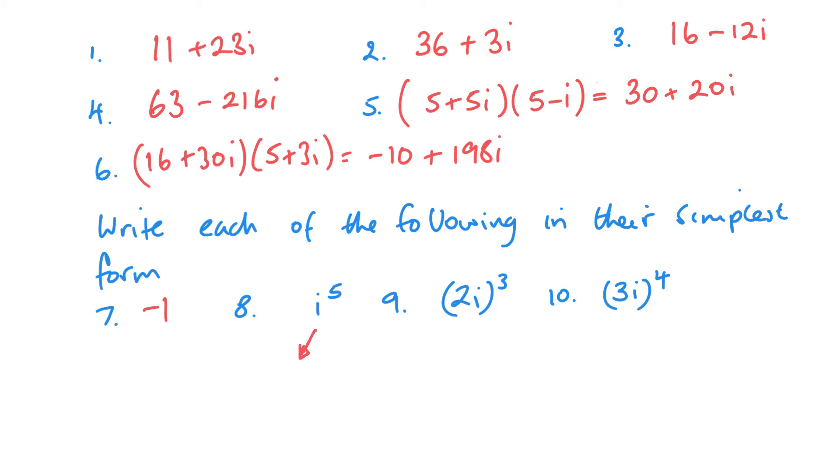So this is just going to be i to the power of 5. So this is just going to be i. When I'm looking at this one, to the power of 3, so first 2 cubed is 8i cubed. So this is the same as 8i squared times i. i squared is minus 1, so we've got minus 8i.